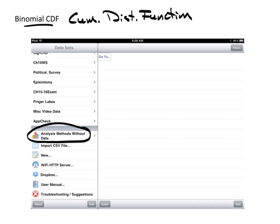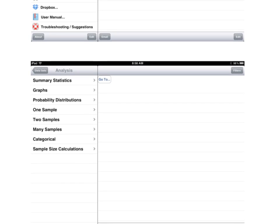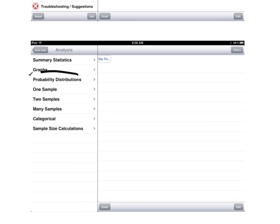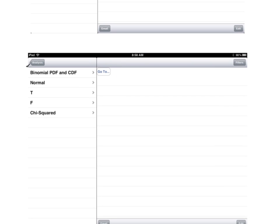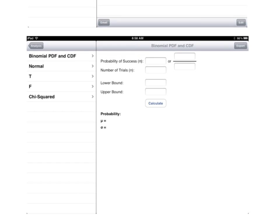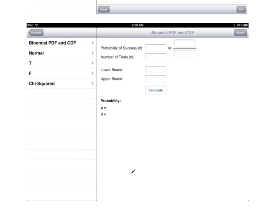When you select that, you will come to this screen, and you'll see this option says probability distributions. Select probability distributions, then you're here at binomial PDF and CDF. We use the same screen to handle both. So, tap on that, and then this is your screen. This is what you'll be working with.